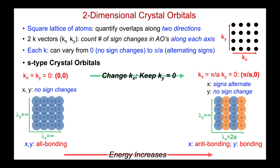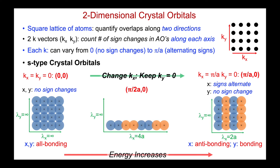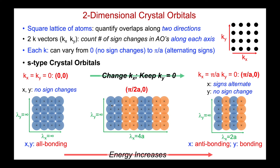Let's look at the crystal orbital midway between these two, keeping ky equal to zero but setting kx equals π/2a. That gives a wavelength of 4a, which means plus, plus, then a sign change — this is actually non-bonding in the x direction. Along y, we keep everything the same, no phase changes, repeating the same arrangement. So: x direction non-bonding, the overall net result is non-bonding, but along the y direction, because ky equals zero, this crystal orbital is bonding.